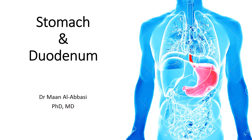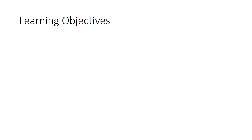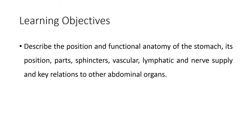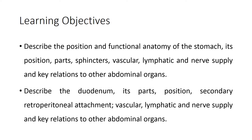Hello everybody. Today I will start with a lecture about the stomach and duodenum. You will be able to describe the position and functional anatomy of the stomach — its position, parts, sphincters, vascular supply, lymphatics, nerve supply, and key relations to other abdominal organs. We will also describe the duodenum: its parts, positions, retroperitoneal attachment, vascular supply, lymphatics, nerve supply, and key relations.